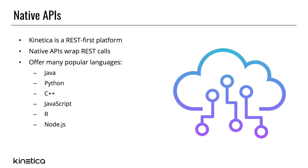Kinetica enables developers with native and REST APIs that make it easy to integrate your location-intelligent application with Kinetica. Kinetica is a REST-first database, meaning most of our functionality can be performed directly over HTTP, even SQL commands.